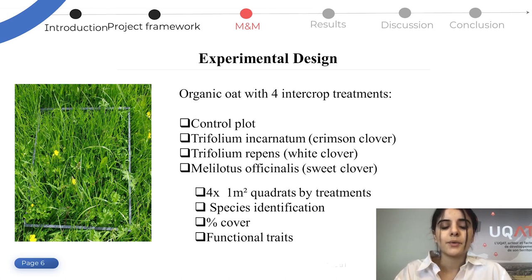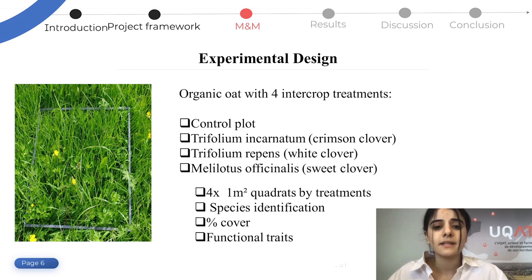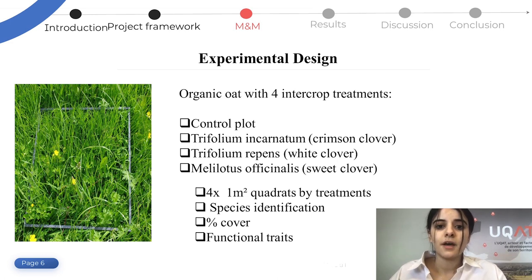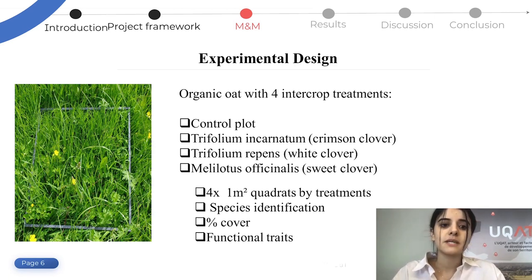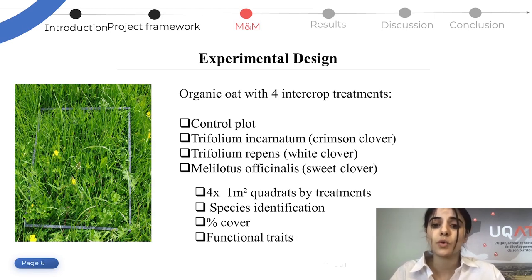The present study was carried out in Polari, Abitibi, with a farmer in large organic oat production and another farmer who also produces organic wheat. We placed four treatment modalities: crimson clover, white clover, sweet clover, and a control plot. Four quadrats were placed on each plot for each treatment method. On each quadrat, we had the taxonomic identification of the species, the identification of the percentage of cover — not only of the species but also of all biomass present in the quadrat — and we also measured the functional traits.